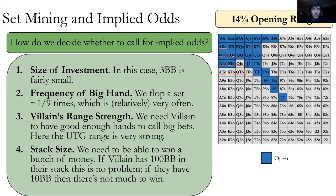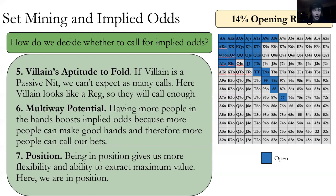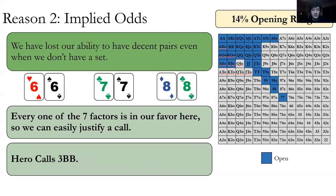Going over the seven factors for calling with sixes through eights here: it's cheap to call, we'll make our set pretty often, villain has a strong range, they've got 100 big blinds, they're not going to fold too much, the pot can totally go multi-way with four people left to go, and we have position. Every one of the seven factors is in our favor, so we can justify calling with these.